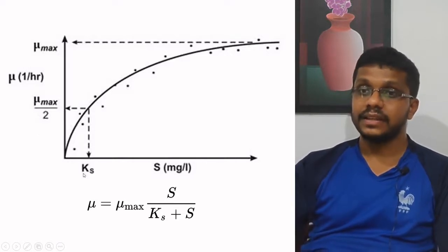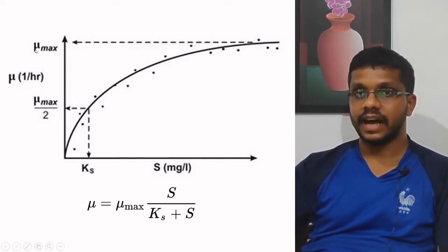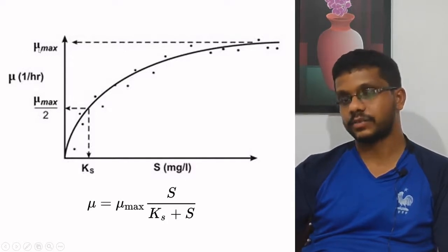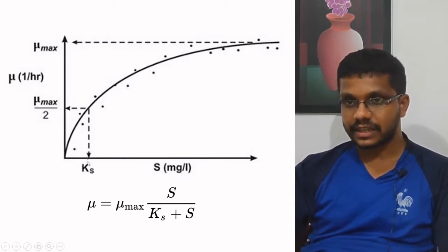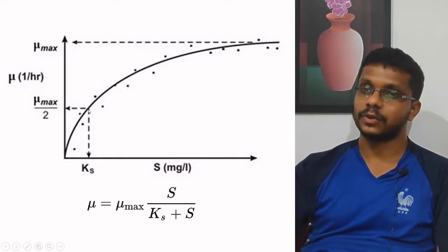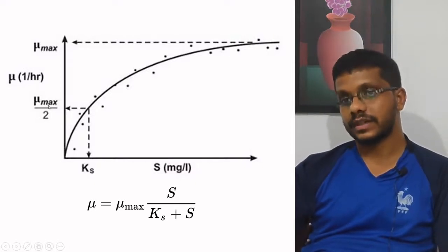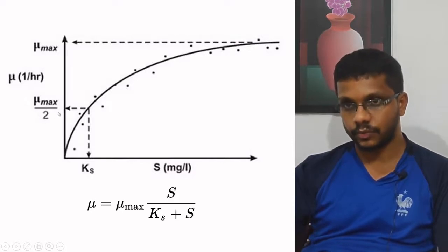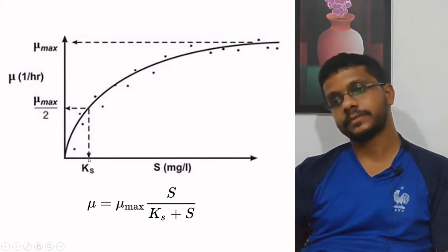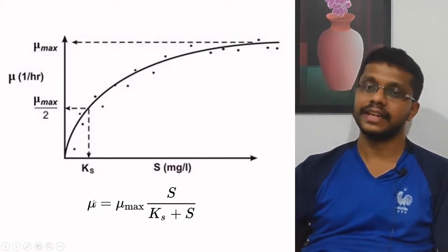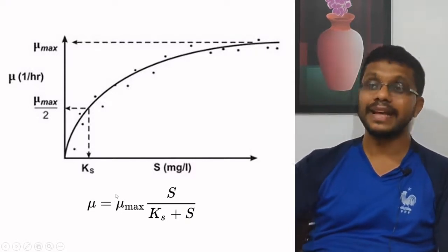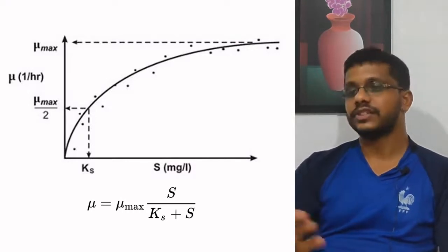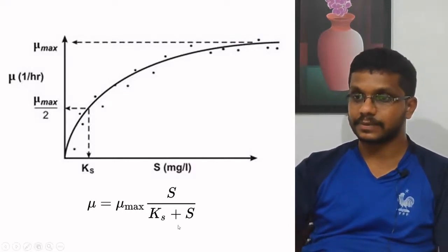Ks is calculated by first taking half of mu_max. The substrate concentration corresponding to half mu_max is called Ks. So we take the half mu_max value, draw a line to the curve and down to the x-axis — that substrate concentration is Ks. From this, we get the Monod equation: mu equals mu_max times S divided by (Ks plus S), which is the mathematical explanation for microbial growth — the relationship between growth rate and substrate concentration.